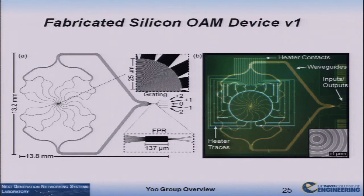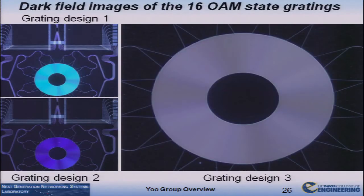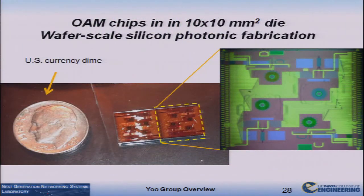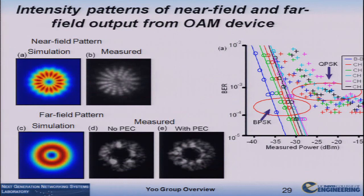This is the fabricated device. Our free propagation region allows five different input states to excite a spatial grating with apertures generating L=0, 1, 2, and so on. This is an actual fabricated silicon photonic device. We made more advanced devices with better gratings — 33-state and 9-state OAM devices in a very compact form factor fitting into roughly 8 mm × 8 mm die. We launched five different OAM states and detected five simultaneously in a free-space transmission link, achieving below bit-error-rate of 10⁻³ for forward error correction.